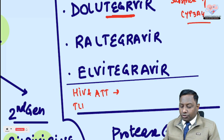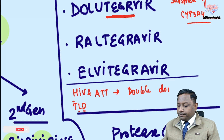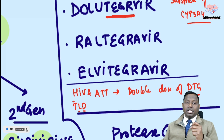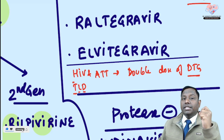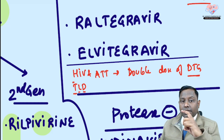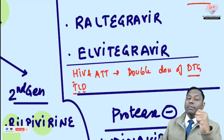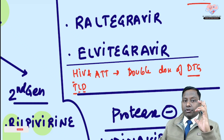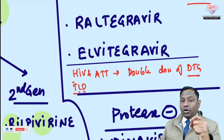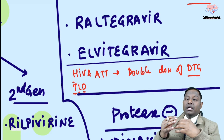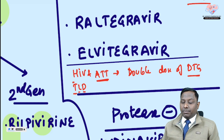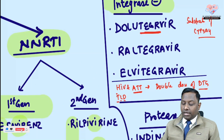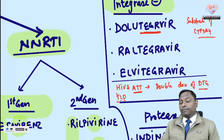In the TLD regimen — tenofovir, lamivudine, dolutegravir — when co-administered with ATT, you must double the dose of dolutegravir. Tenofovir is a nucleotide reverse transcriptase inhibitor excreted unchanged via the kidney, so its dose is unaltered. Lamivudine is metabolized by non-microsomal enzymes (sulfation), so it also remains unaffected. Only drugs metabolized by microsomal enzymes need dose adjustment.